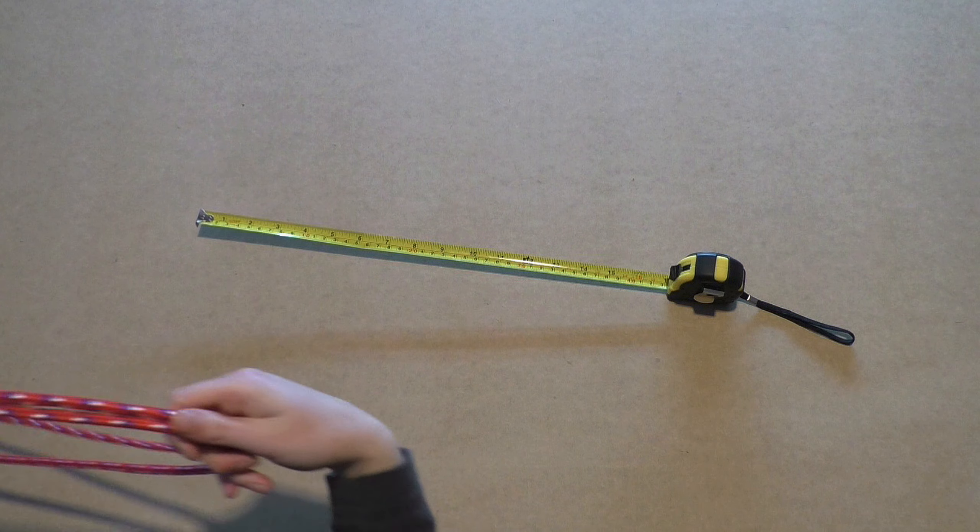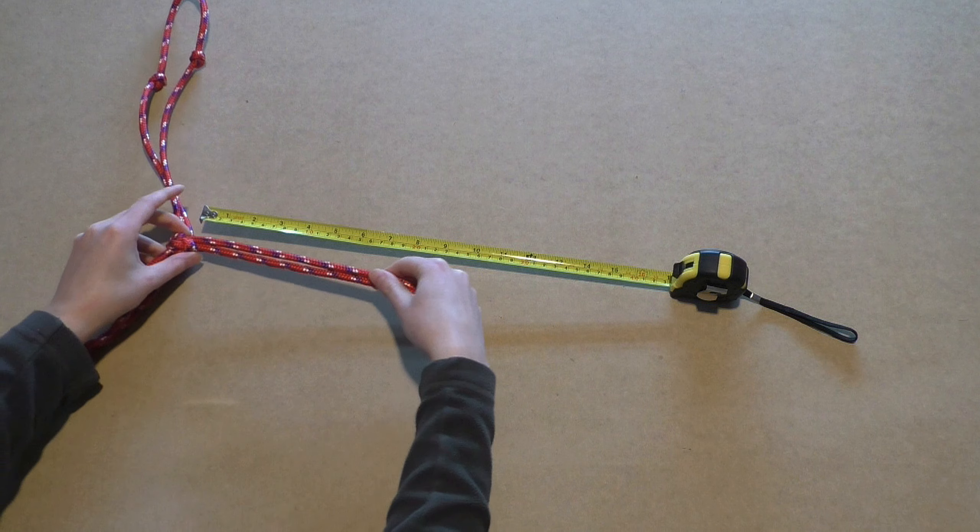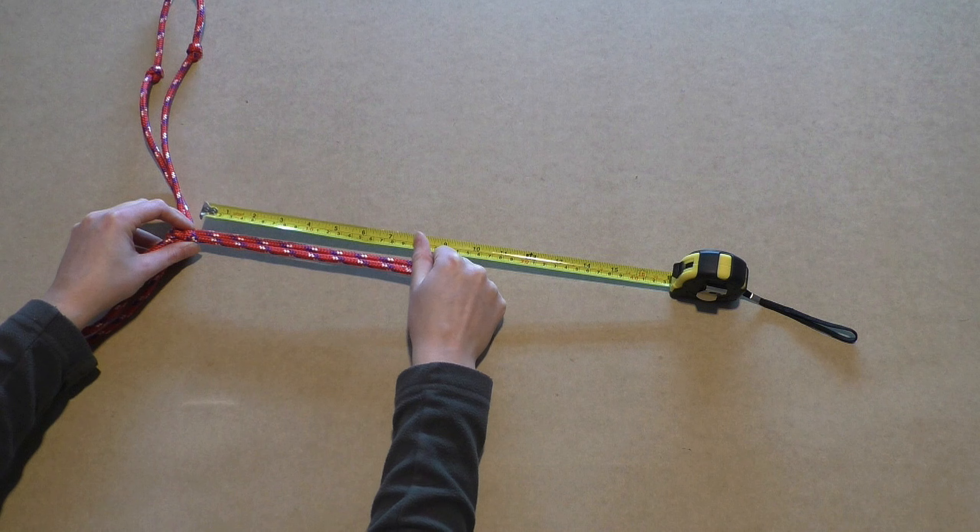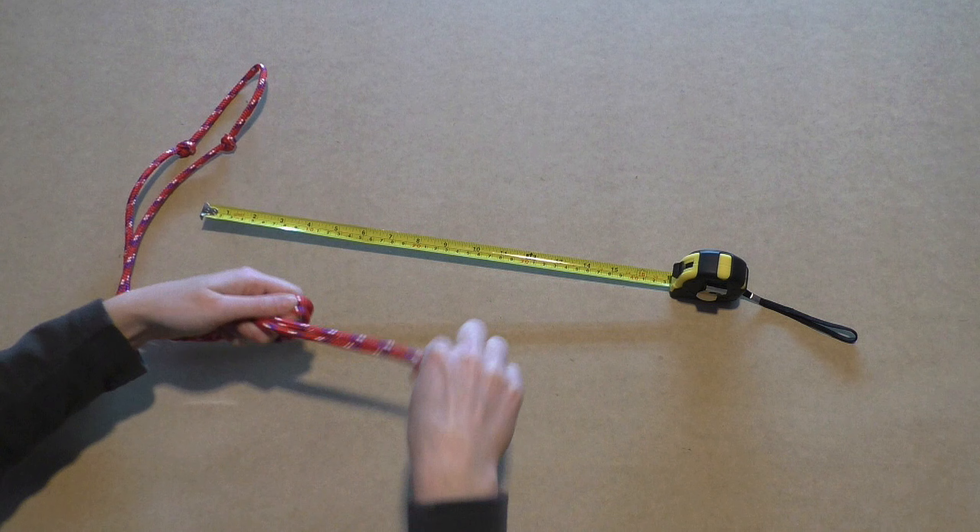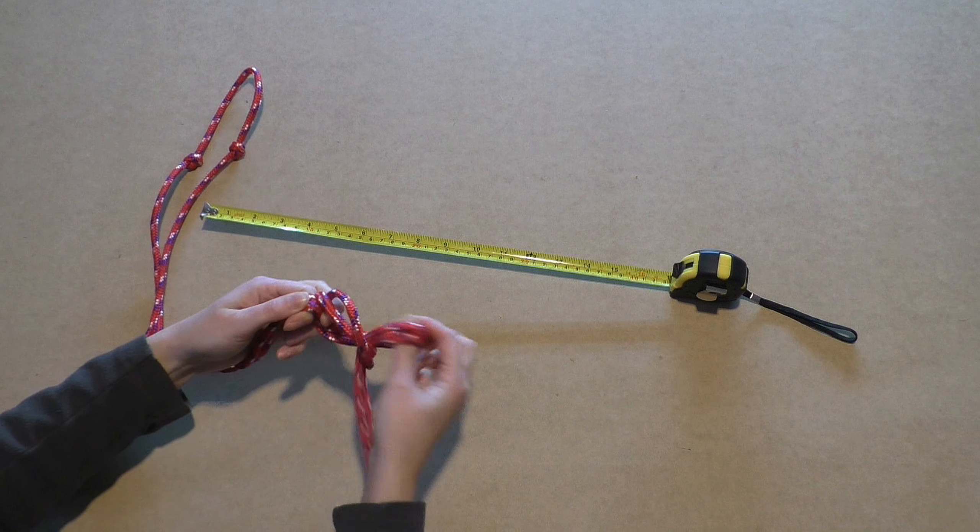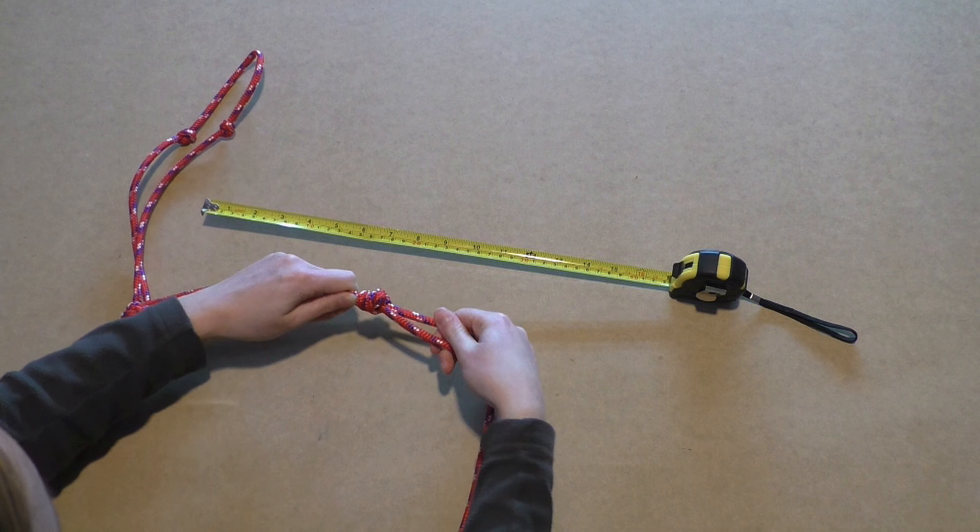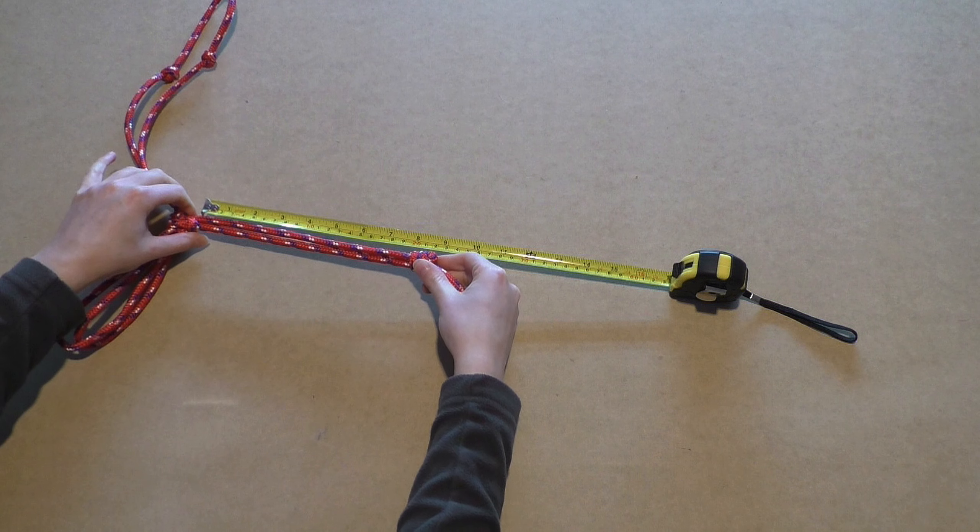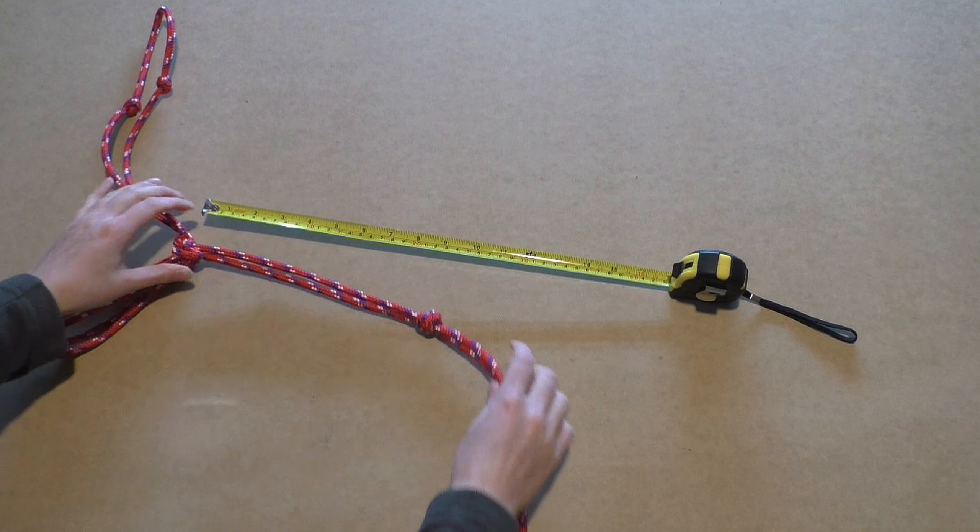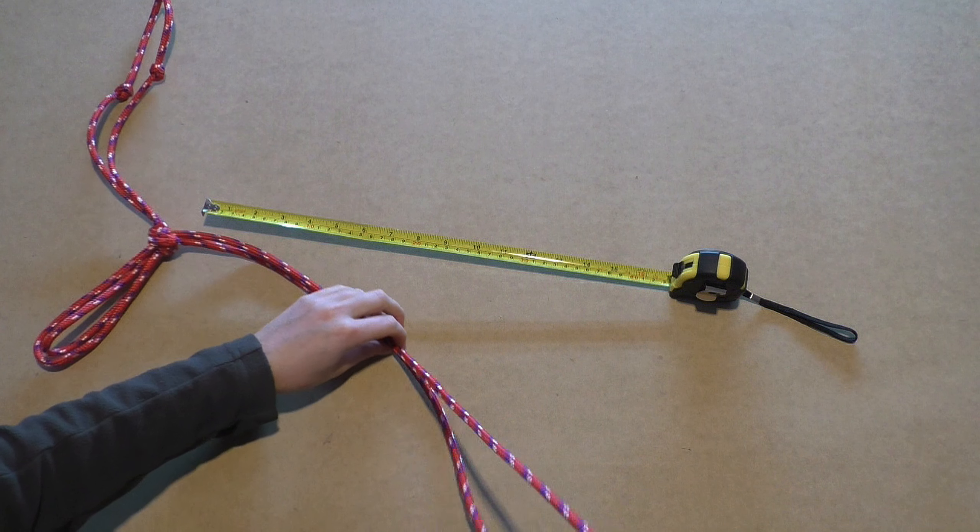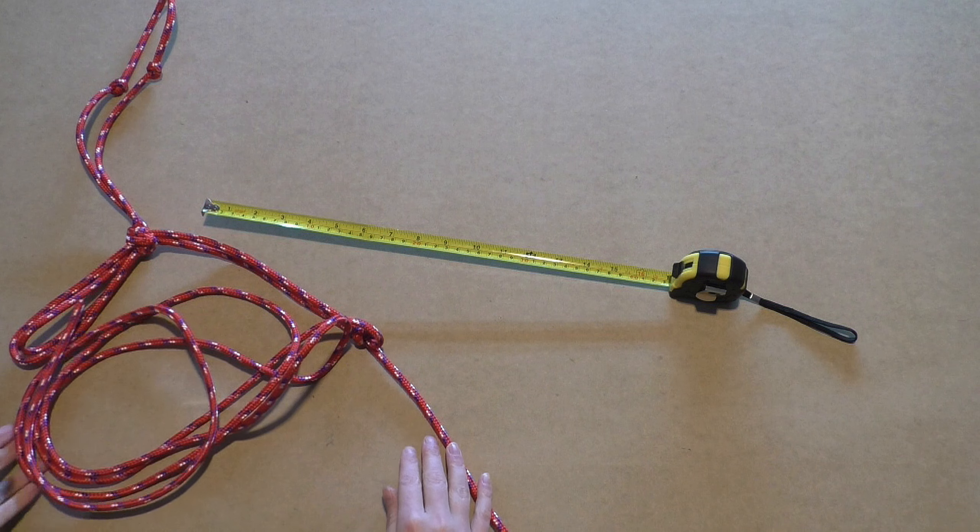Get your tape measure and measure about 20cm from the Fyodor knot on the loose rope ends. Here you tie an overhand knot. Make sure the longer end ends up on the left side and the shorter end on the right.